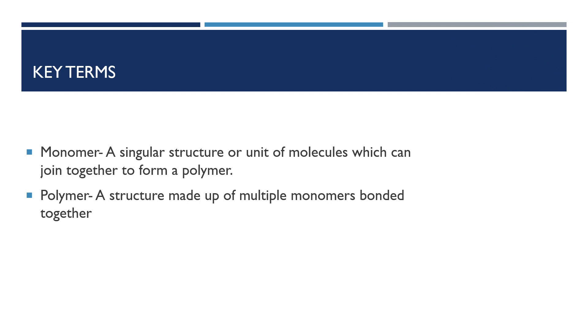There are two main key terms that you're going to need to know for AQA biology, and this is what is a monomer and what is a polymer.